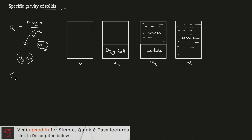For the determination of specific gravity, we use a pycnometer similar to water content determination. But instead of a wet soil, here we take a sample of dry soil — the soil has to be dried up first.